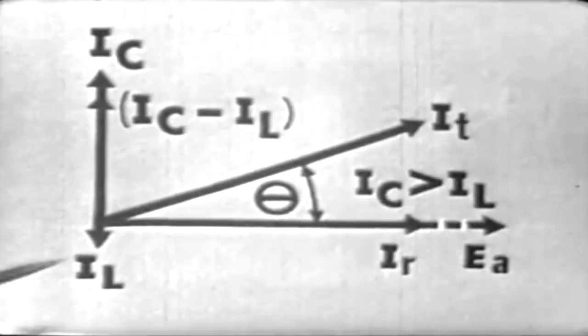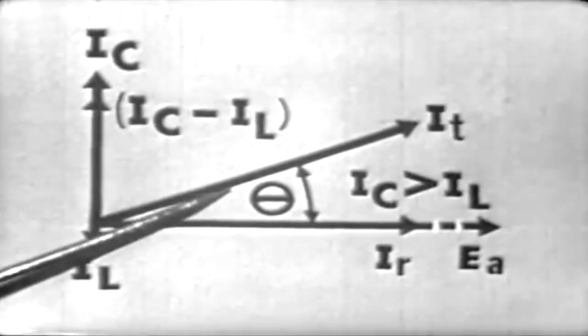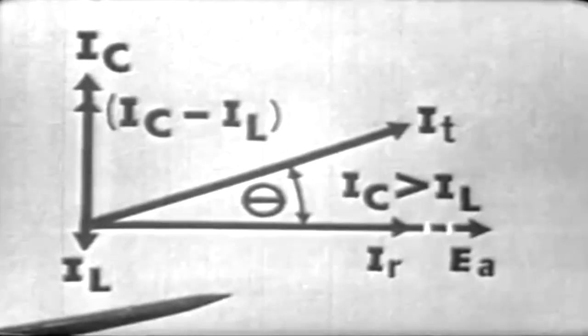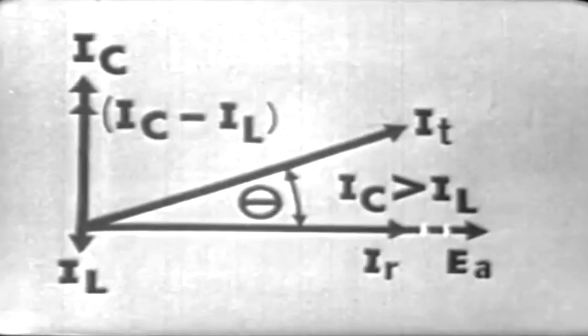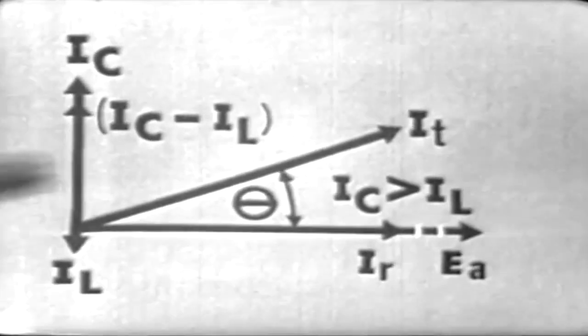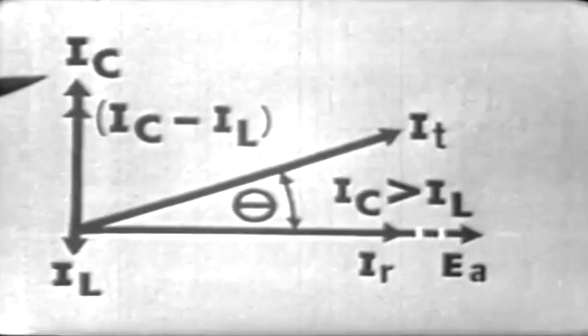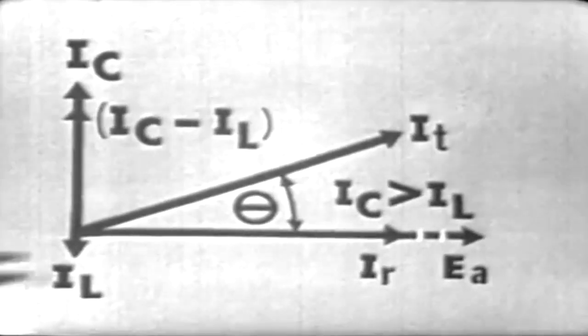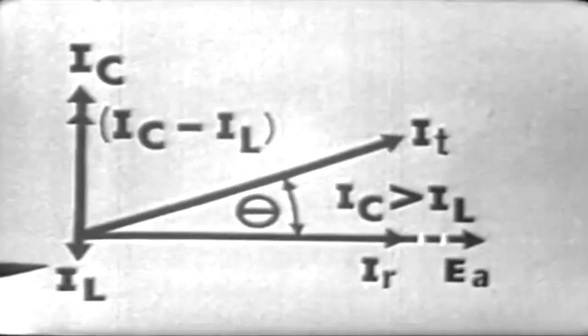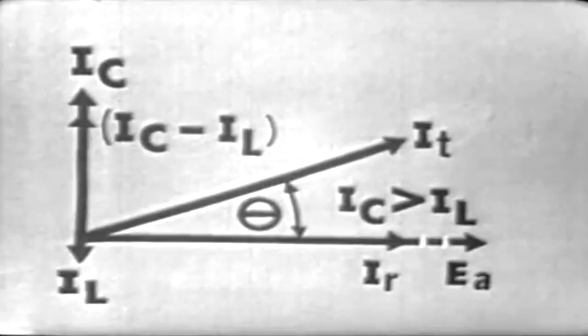But suppose now, I wanted our circuit to go from a leading phase angle down to a lagging phase angle. To cause this to occur, IL would have to be greater in magnitude than IC. What circuit change could we make for this to occur? To illustrate this point, I have a little demonstration set up.